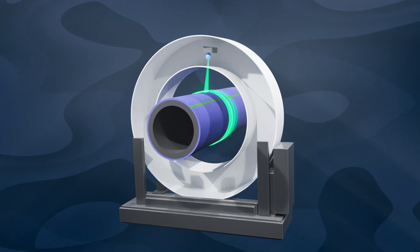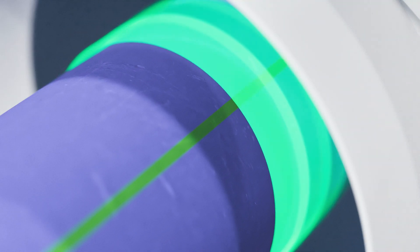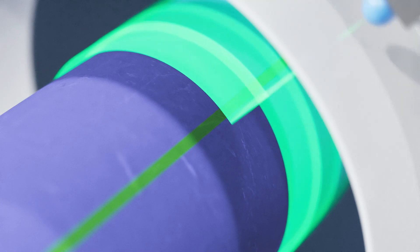The rotation of the transceiver is continuously adjusting to the line speed, resulting in a very tight, overlapping helix structure that covers 100% of the pipe's circumference.